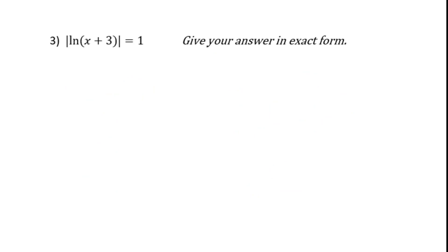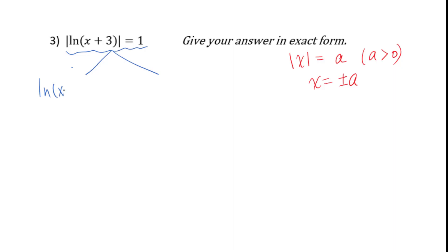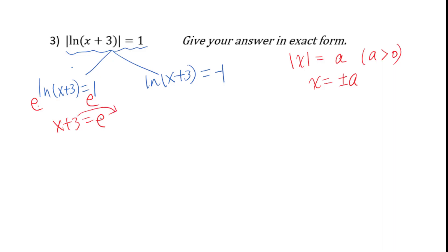For number 3, this is an absolute value equation. We know |x| equals a means x equals plus or minus a, where a is greater than 0. Therefore we can change this equation into two equations: natural log of (x plus 3) equals 1, or natural log of (x plus 3) equals negative 1. For the first case, raise base e both sides: x plus 3 equals e, so x equals e minus 3. For the second case, raise base e both sides: x plus 3 equals 1 over e, so x equals 1/e minus 3.